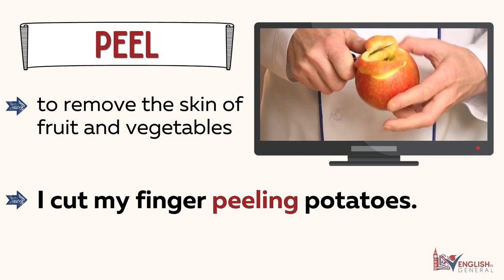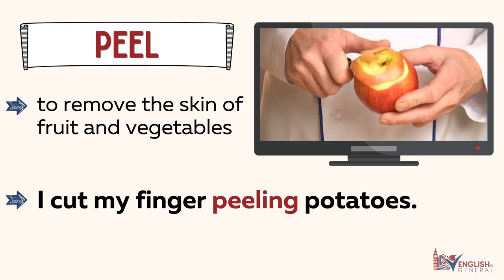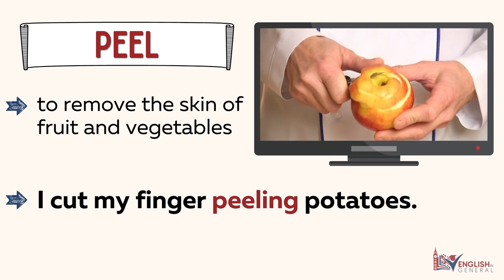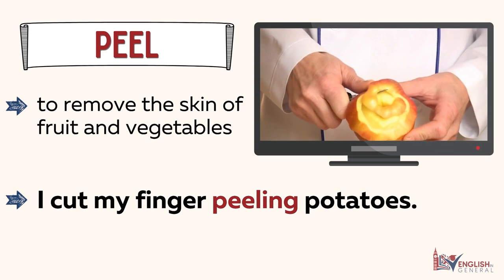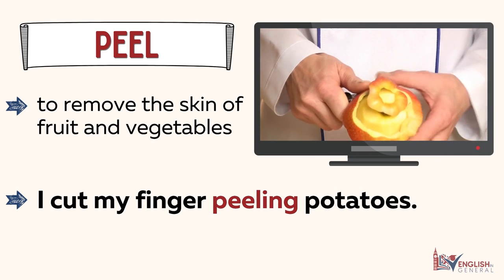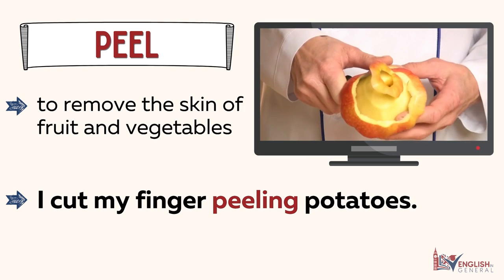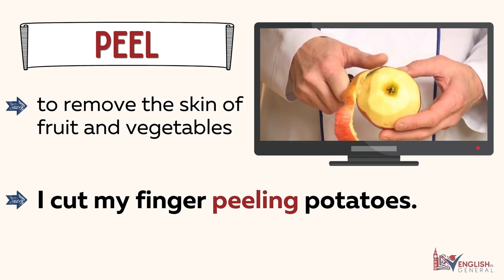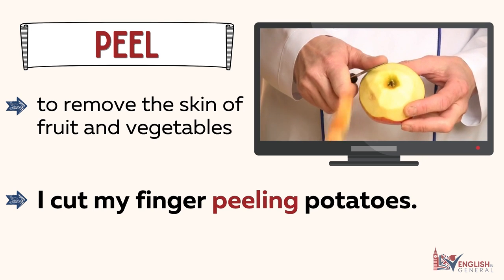Peel. Definition: to remove the skin of fruit and vegetables. I cut my finger peeling potatoes.